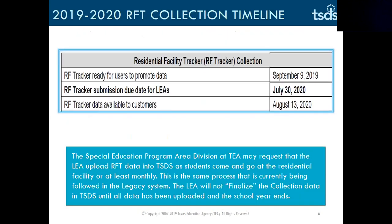Beginning in the 2019-2020 school year, residential facility tracker information will be collected through the Texas Student Data System. This change will streamline the data collection process and decrease duplicate recording. The 2019-2020 RFT collection timeline is shown here with upload requirements. Please refer to the TEA Special Education in Residential Facilities webpage for additional information, including recent changes made to the 18-19 tracker.